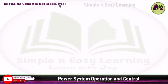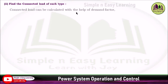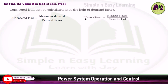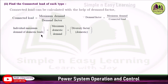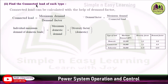Next, find the connected load of each type. There are three types: domestic, commercial, and industrial. The connected load can be calculated using the demand factor formula: connected load equals maximum demand divided by demand factor. As we know, demand factor equals maximum demand divided by connected load. The individual maximum demand of each type is calculated by multiplying the maximum demand by its respective diversity factor.